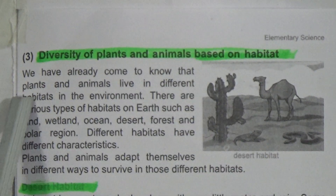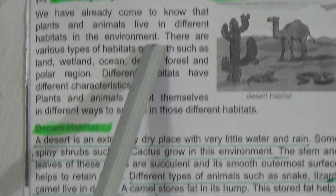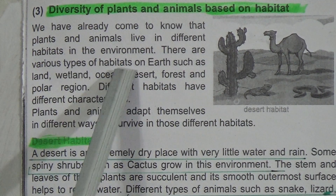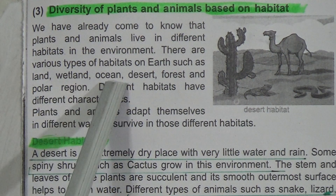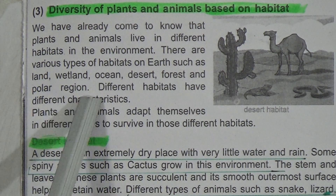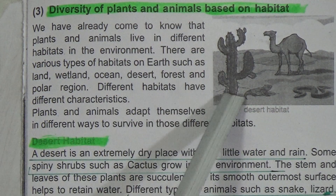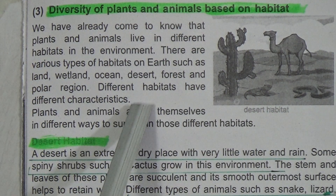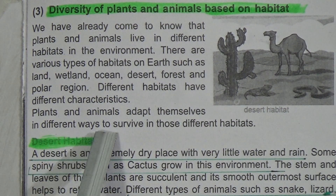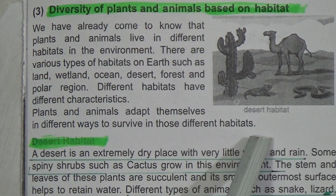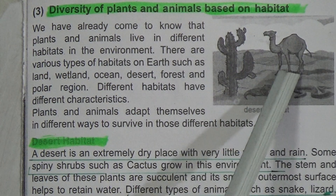Diversity of plants and animals based on habitat: we have come to know that plants and animals live in different habitats. There are various types of habitats on earth such as land, wetland, ocean, desert, forest, and polar region. Different habitats have different characteristics. Plants and animals adapt themselves in different ways to survive in those habitats. This is a picture of a desert habitat.